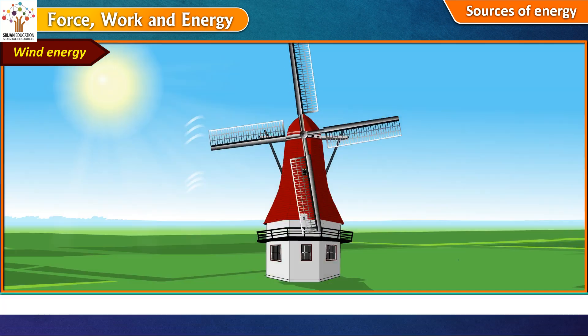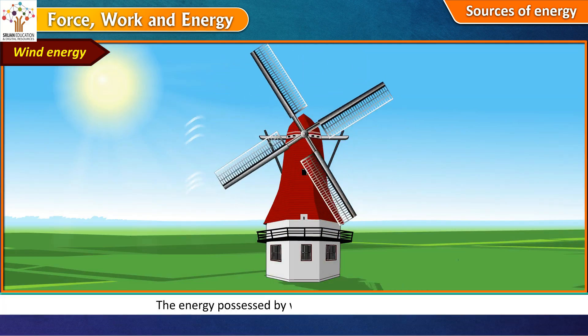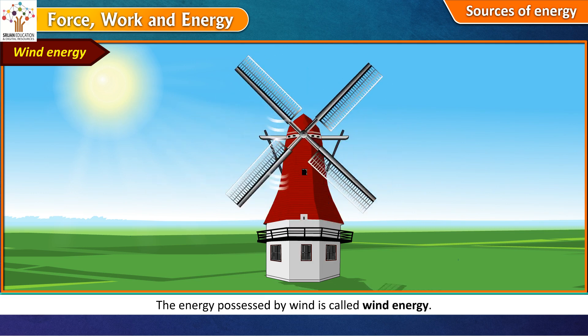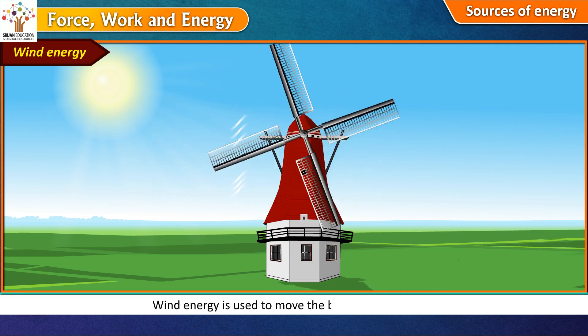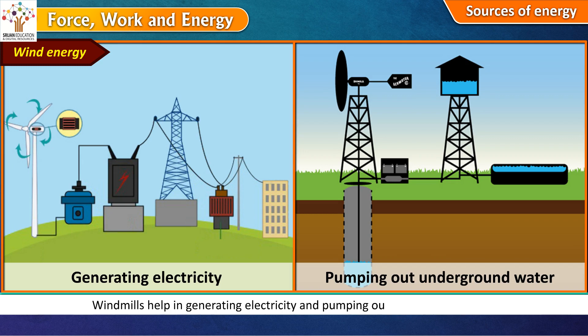Wind energy. The moving air is called wind. The energy possessed by wind is called wind energy. Wind energy is used to move the blades of a windmill. Windmills help in generating electricity and pumping out underground water.